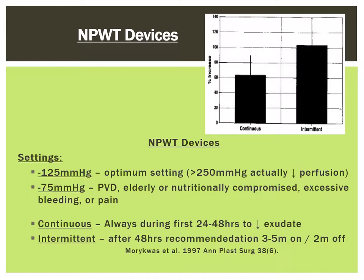In terms of their settings, there are some conflicting recommendations, but in general a suction pressure of minus 125 mmHg is the optimum setting, with the exception of patients with peripheral vascular disease, elderly patients, or those with excessive bleeding or pain, where a reduced pressure of minus 75 mmHg should be used. In terms of continuous versus intermittent settings, there is some evidence that an intermittent setting results in greater granulation tissue formation. This is likely related to the periods of hypoxia, which promotes greater granulation, angiogenesis, and cellular matrix support to the tissue cells, allowing them to survive. However, the recommendation is still to maintain the VAC on continuous suction for the first 48 hours to remove debris and edema before switching over to an intermittent setting. Typically, a 3-to-5 minute on and a 2-minute off setting is employed.